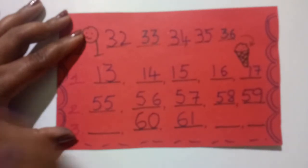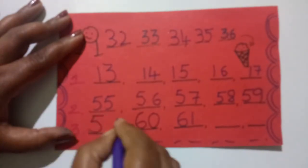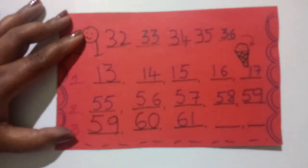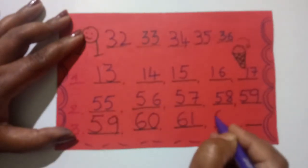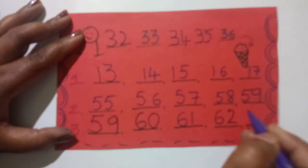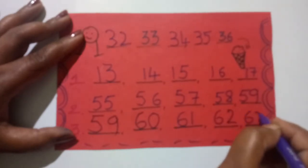Before 60, before 0. That is, before 10. We have 9, no? So, we have 59. 59, 60, 61, 62, and 63.